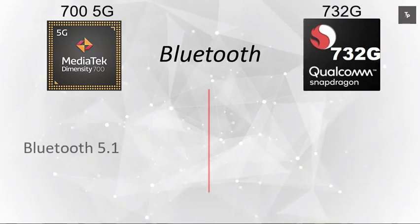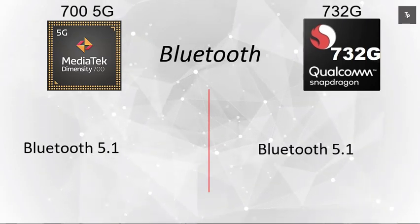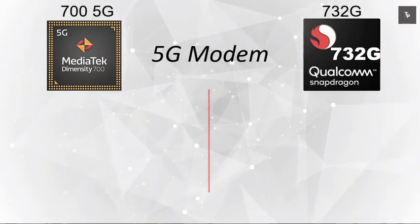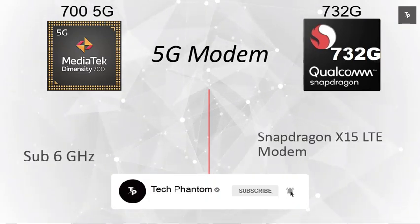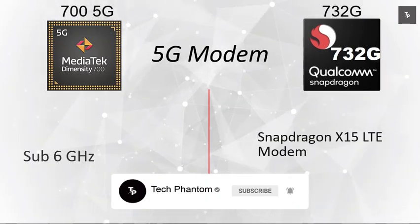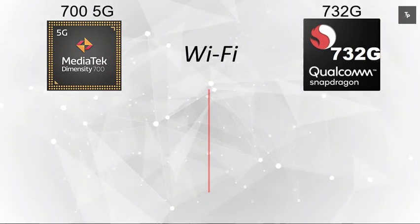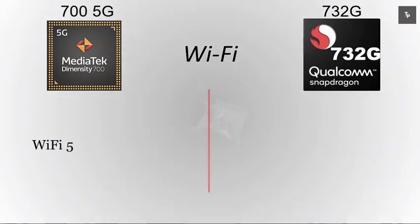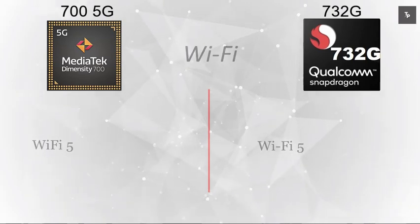On the Bluetooth side, both chipsets support Bluetooth 5.1. For 5G, the MediaTek Dimensity 700 has a 5G modem but it's sub-6 GHz only, whereas the Snapdragon 732G has only a 4G modem. Both phones come with Wi-Fi 5, not Wi-Fi 6, but considering these are budget phones, that's acceptable.